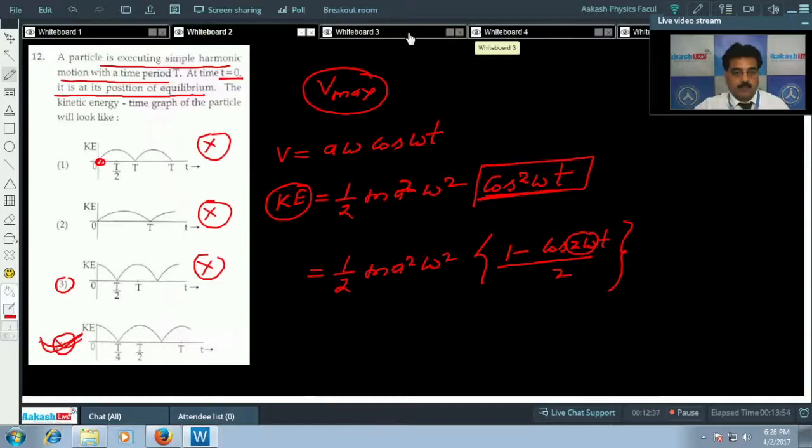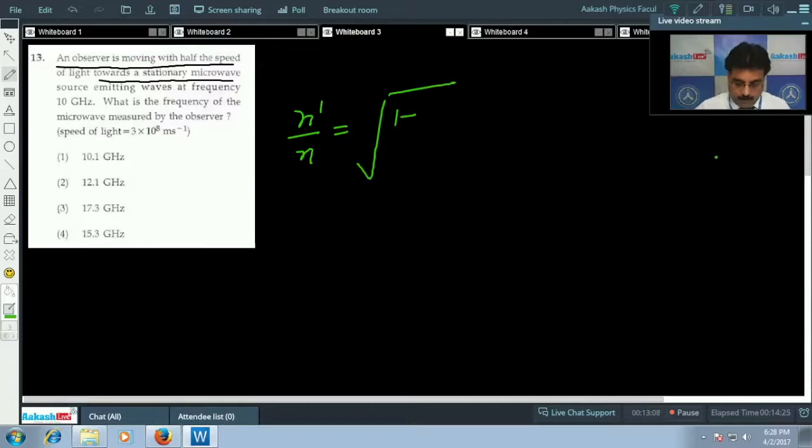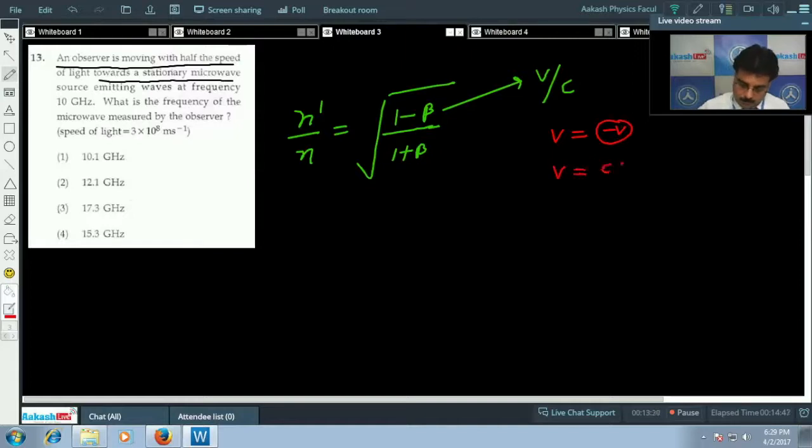Now question number 13. An observer is moving with half the speed of light towards a stationary microwave. This is a very important line. I have a relation: apparent frequency equals actual frequency times root of 1 minus beta upon 1 plus beta, where beta is given by v by c. But observer is moving towards the source, so we will take v with negative sign. According to the problem, v equals c by 2, so we can write beta equals minus half because v is negative.